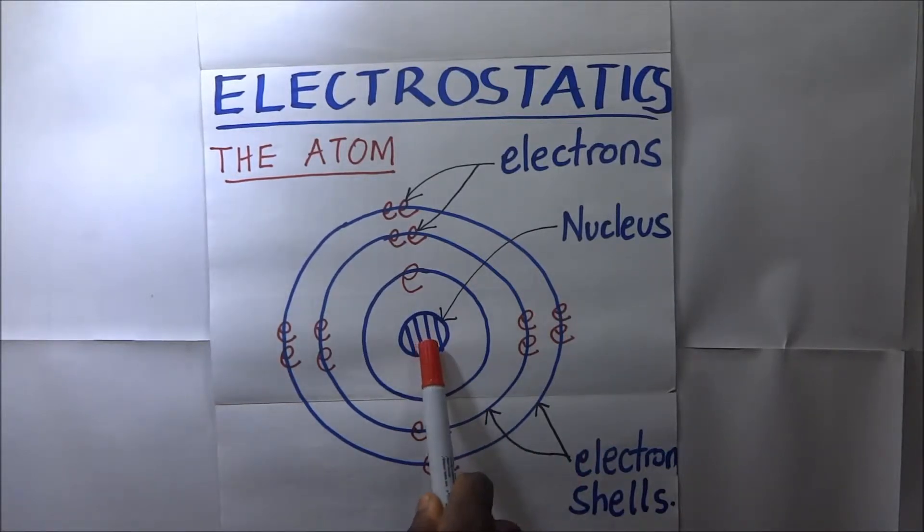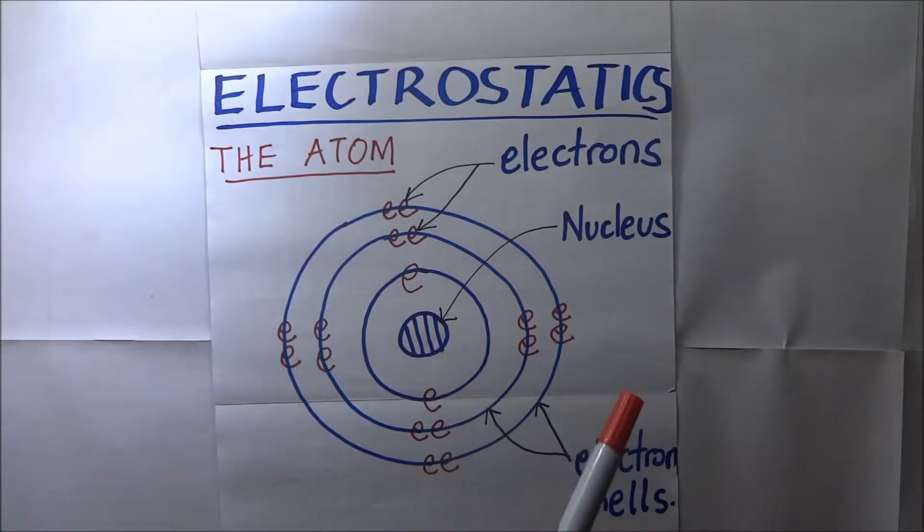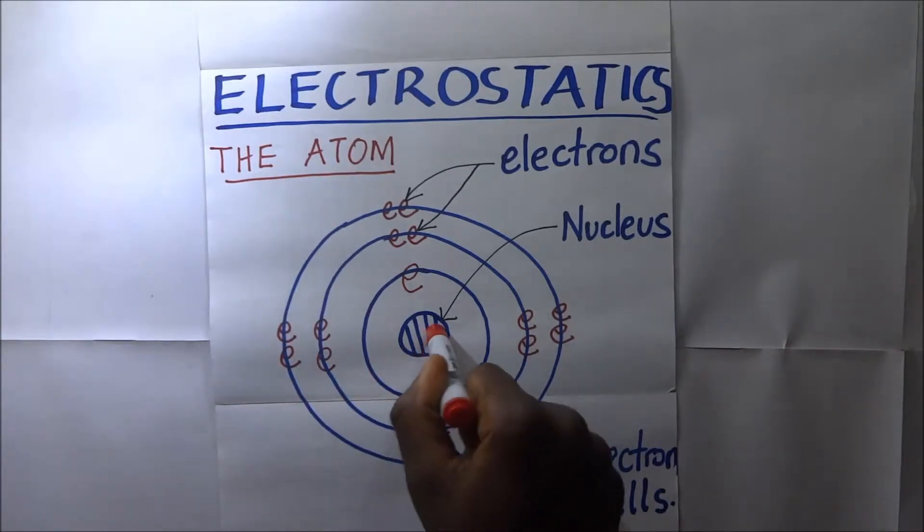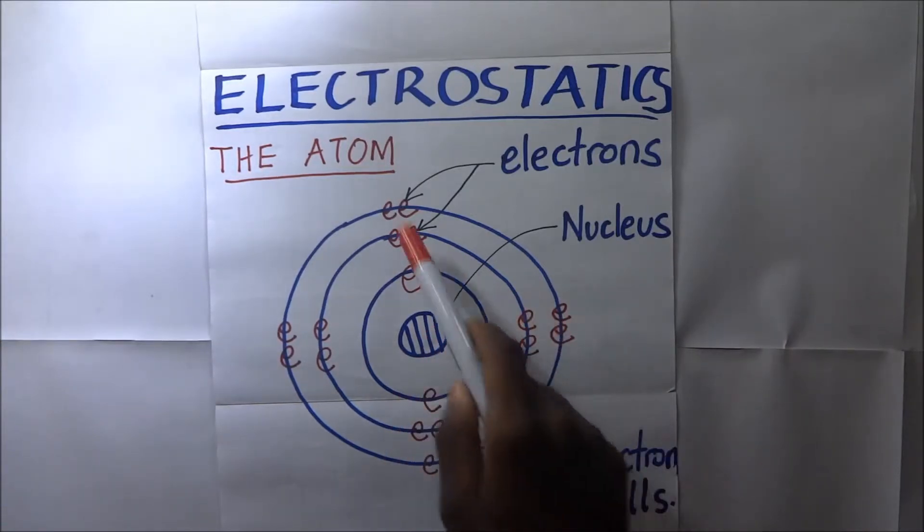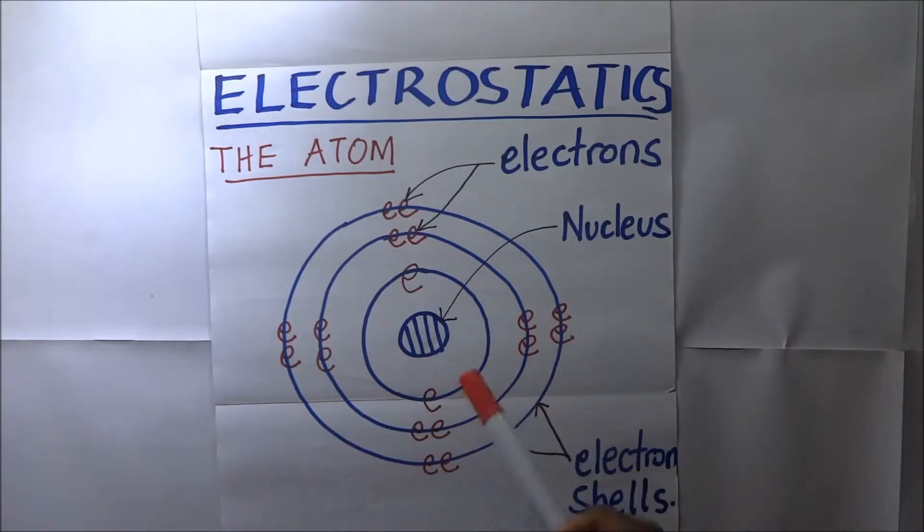These neutrons and protons combined together make the mass of the nucleus. It should also be known that the mass of an atom is concentrated at the nucleus, and these electrons have got a negligible mass. So when you want to find the mass of the atom, we simply compute the total number of neutrons and the total number of protons that are present in the nucleus.